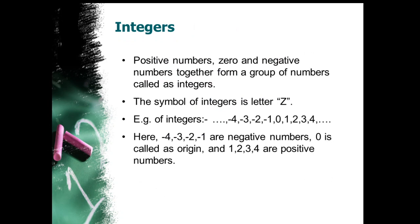These positive numbers, 0, and negative numbers together form a group of numbers called integers. As we learned, natural numbers symbol is N, whole numbers symbol is W. Similarly, integers also have a symbol — capital Z. Examples of integers: they include positive, 0, and negative numbers — minus 4, minus 3, minus 2, minus 1, 0, 1, 2, 3, 4, and so on.